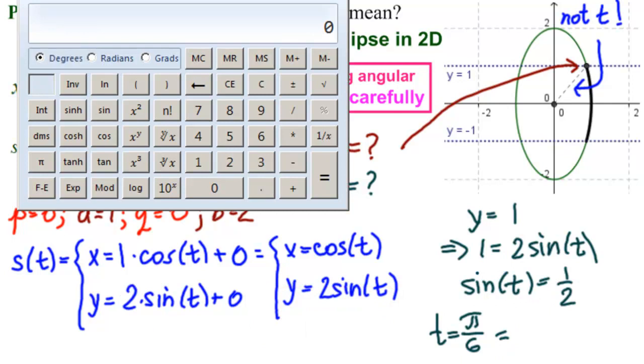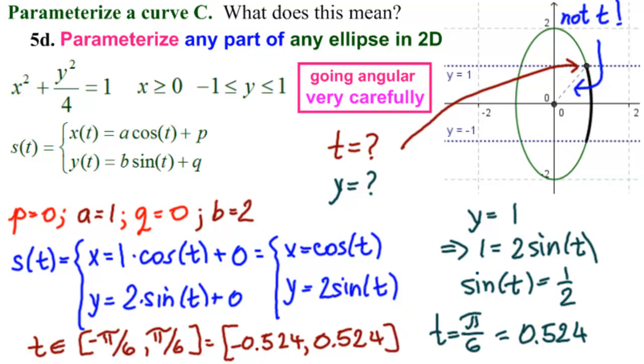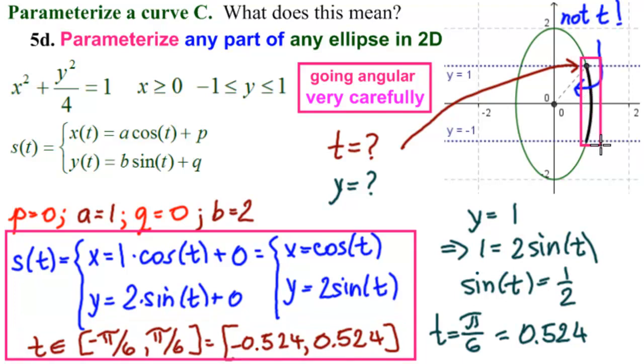Or get our calculator and say radians, 1 divided by 2 equals 0.5, inverse sine, which gives 0.524. So our interval on t for this piece here is t in minus pi over 6 to pi over 6, or if you like decimals, minus 0.524 to 0.524. So our parameterization of this piece of curve right here is this.